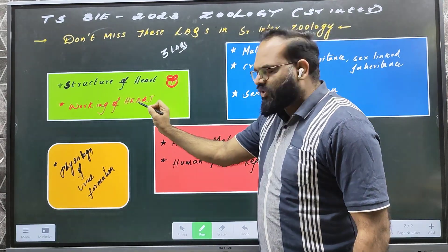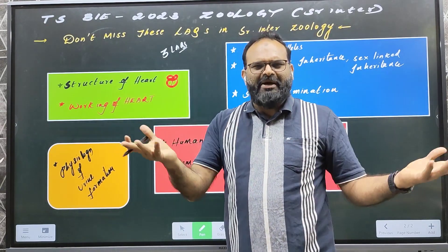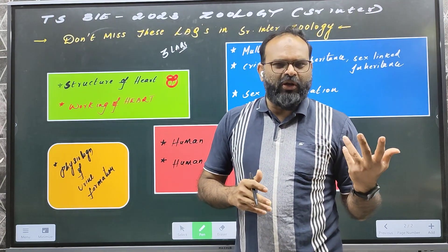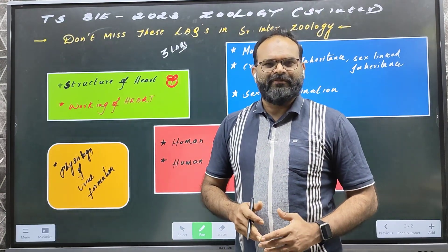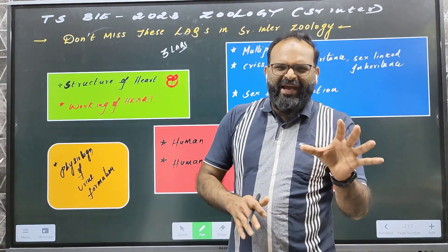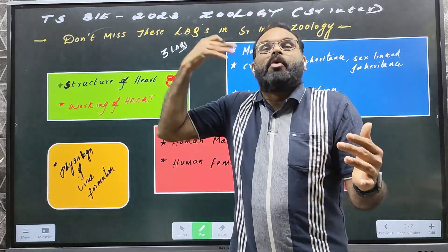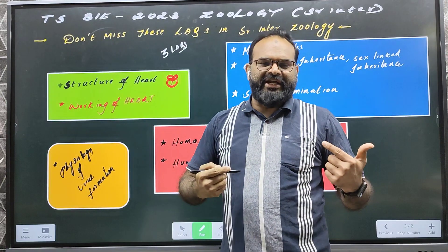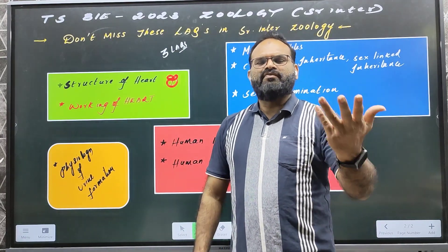Another question is working of heart — everyone, you might have prepared it many times. Systole, diastole, atrial systole, ventricular systole, ventricular diastole — three major steps and simplified diagrams. Students, if you prepare these in a strategic way, understanding each and every line and preparing the most important points that the paper examiner is expecting, if you prepare like that, full marks in every answer will be yours.